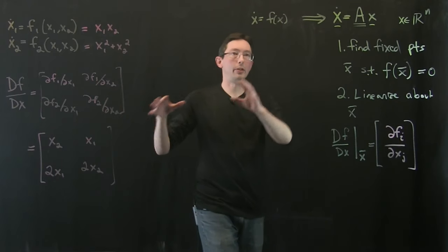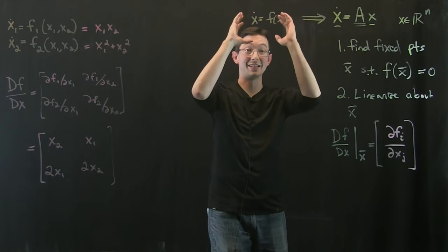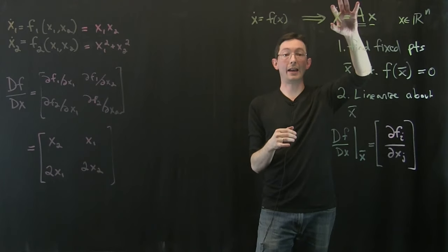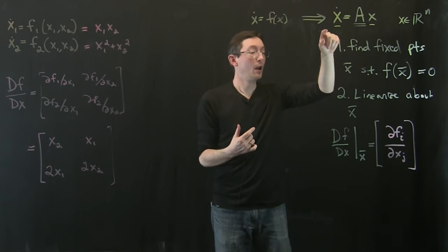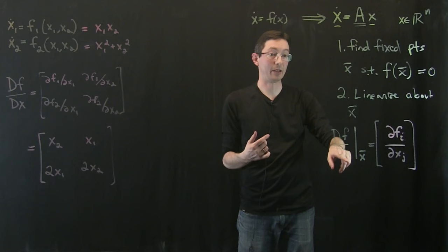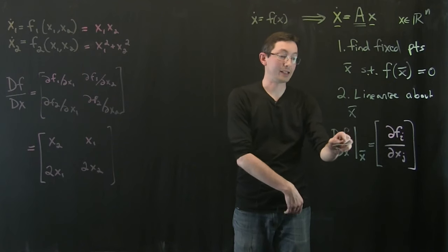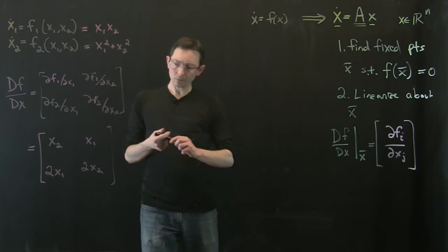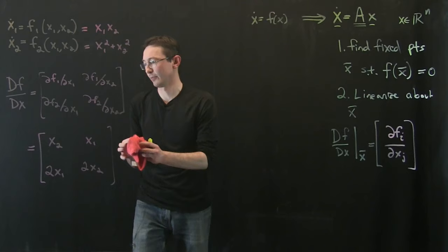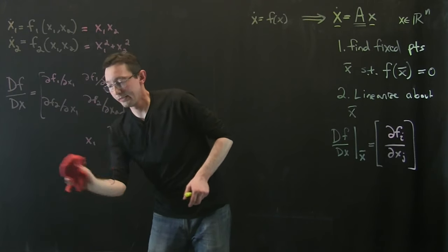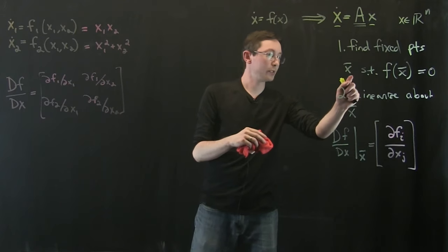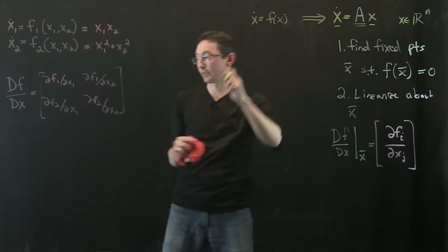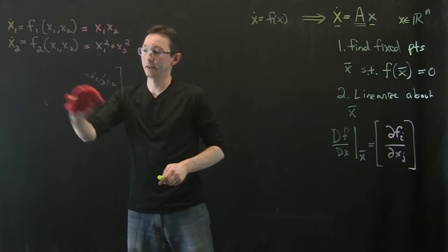So we have a dynamical system x dot equals f of x. It's nonlinear but it has some fixed points like the pendulum. I want to find x dot equals Ax. So I identify my fixed points, compute the Jacobian df/dx, and plug in x-bar. What we're going to find is that the dynamics, if I zoom in really close to this fixed point of this nonlinear system, look linear.